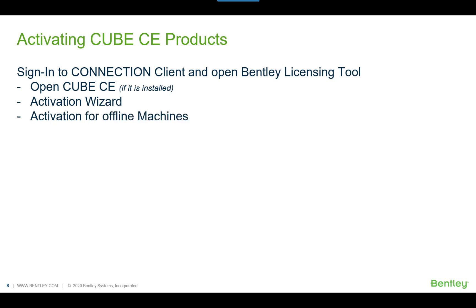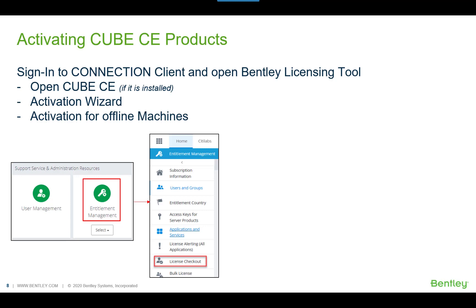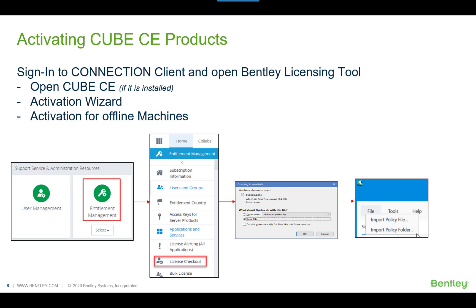Third, you can activate Cube Connect Edition for offline machines. Go to Entitlement Management in Connect Center, then go to the License Checkout option, fill in the details of which products you want to check out, give the name of the offline machine, and set the expiration of the checkout. Save the license file to your computer, copy it to the offline machine, open the Bentley Licensing Tool on the offline machine, go to File > Import Policy File, and you can see the products in the Entitlement tab. For more details, visit communities.bentley.com and search for 'Activating Products.'